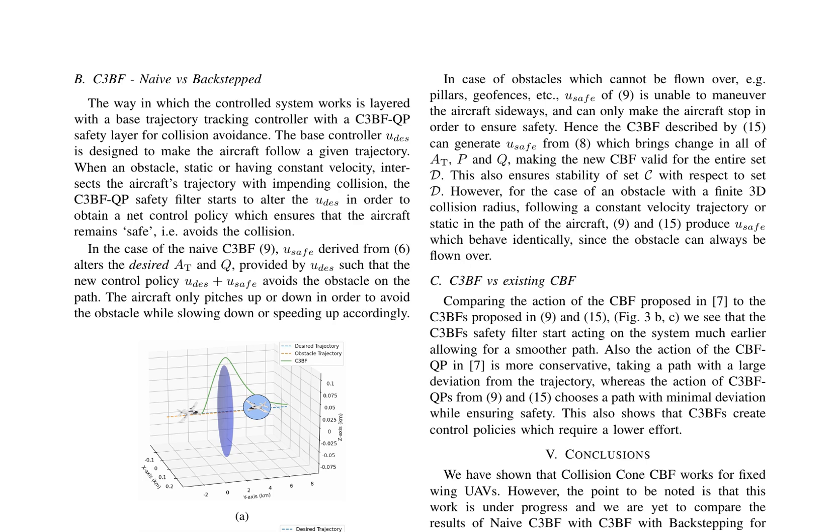The paper presents a comparative analysis of the collision cone control barrier function (C3BF) and its variants, specifically the naive C3BF and the C3BF with backstepping, in the context of fixed-wing UAVs. The primary objective is to ensure safety by avoiding collisions with obstacles, which can be static or moving, using control barrier functions. The C3BF approach, as proposed in [2], utilizes a quadratic program to generate control policies that guarantee collision avoidance. This method has been experimentally validated on unmanned ground vehicles (UGVs) for kinematic obstacle avoidance [3]. However, the existing CBFs, such as those described in [7], are shown to have limitations when applied to fixed-wing UAVs due to their conservative nature and large deviations from the intended trajectory.